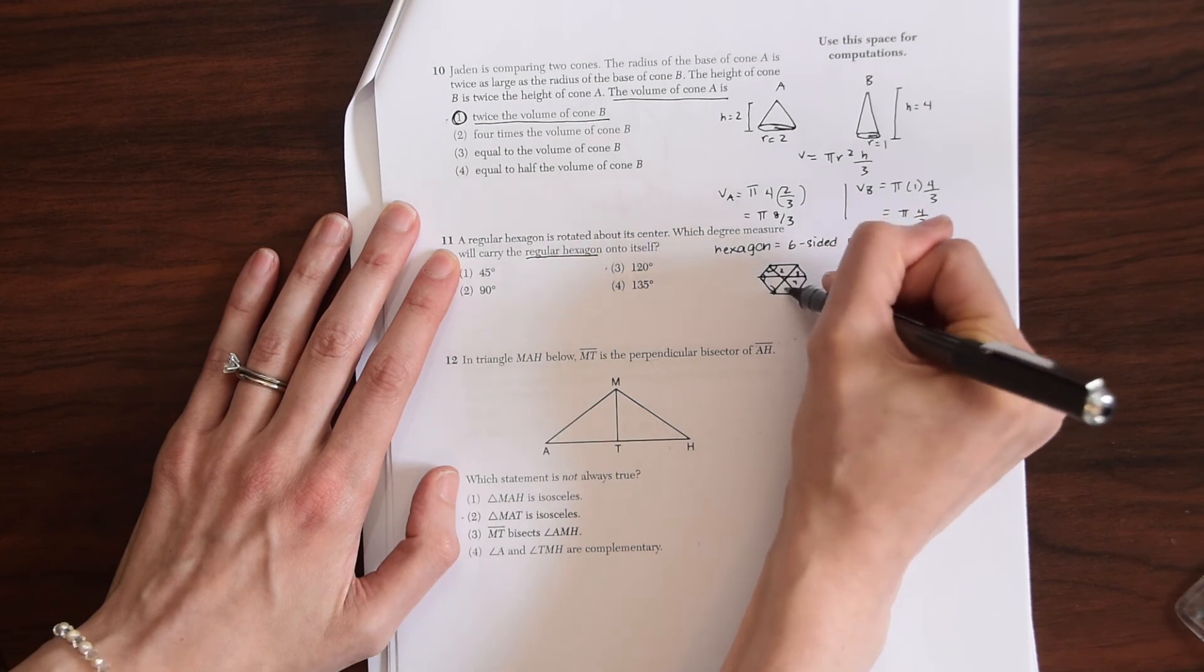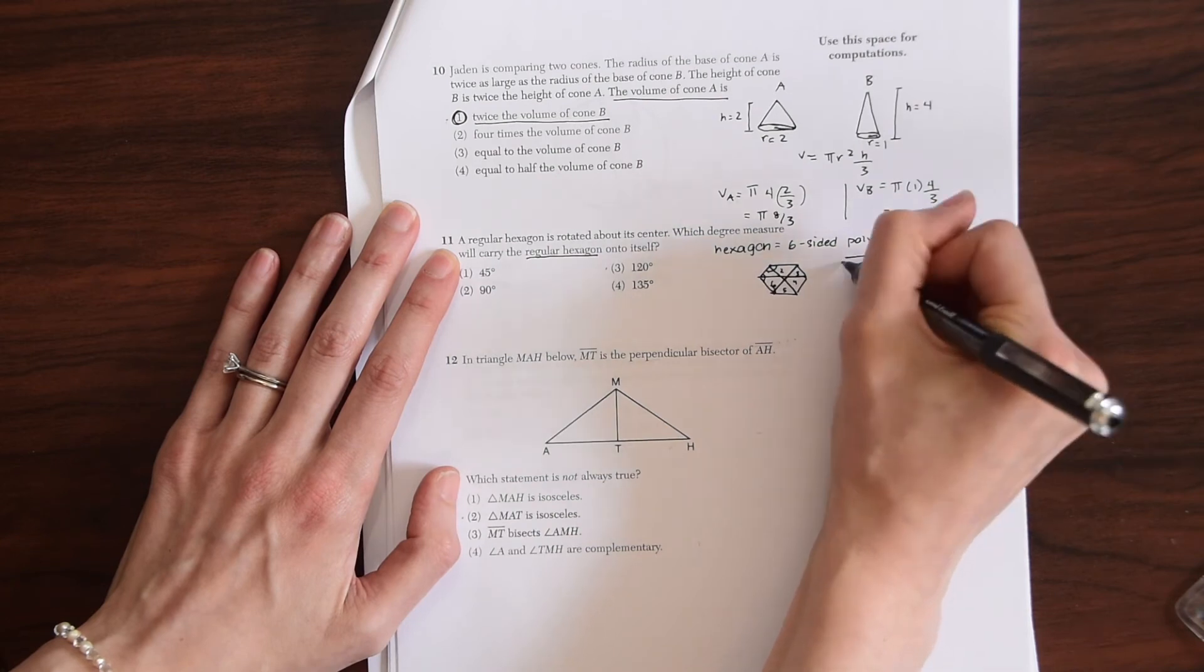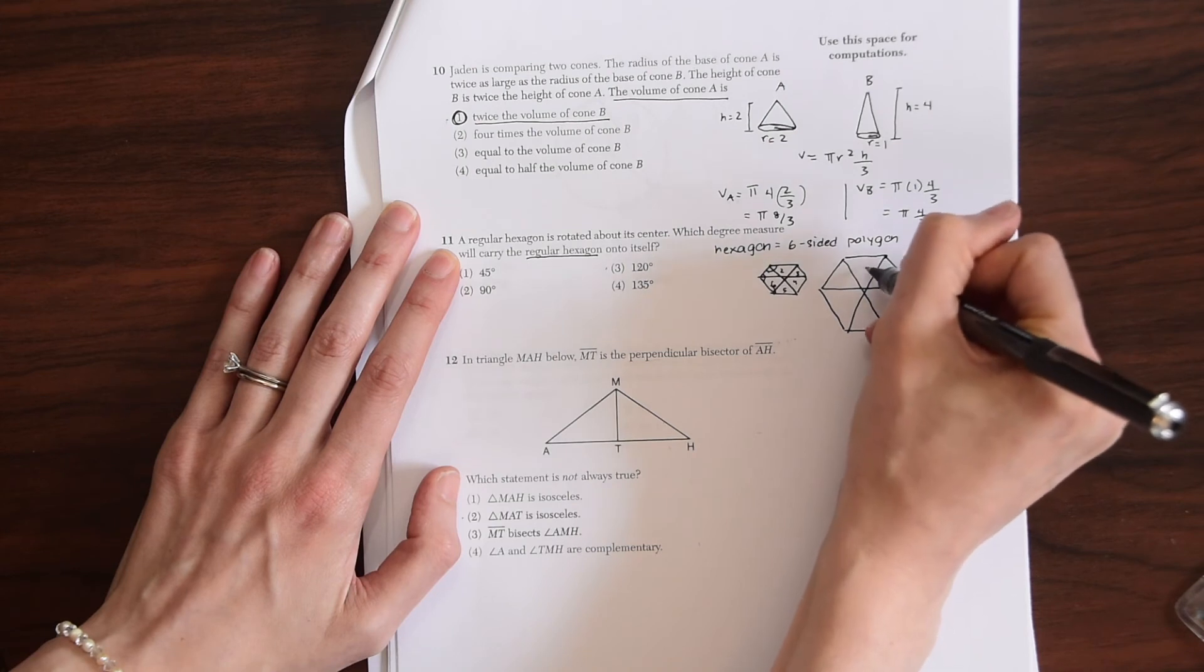One, two, three, four, five, six triangles. Let me draw this a little bit bigger. So we have six triangles. One, two, three, four, five, six.